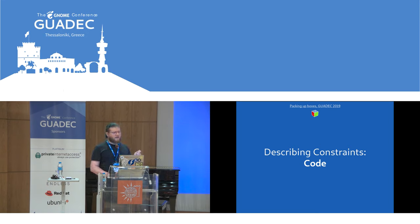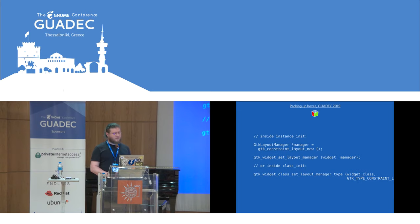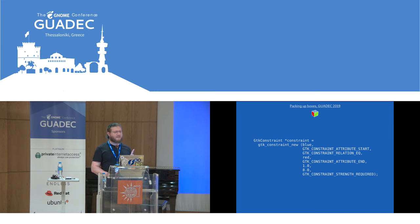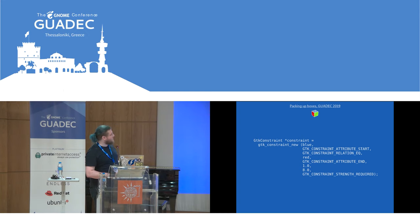So we describe constraints as linear equations — but how do we do that in code? It's kind of pretty simple, though C is really, really verbose. This is how you use a constraint layout manager. I also incidentally added the longest function name in GTK by committing the constraint layout API — take that, GtkCellLayoutBox. This is the description of the constraint we had earlier: the start of blue equals the end of red times 1 plus 8, and it's required.